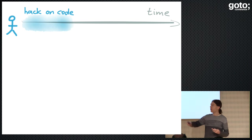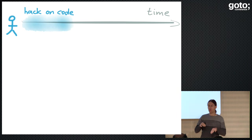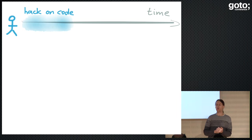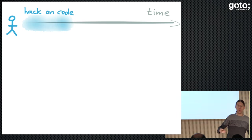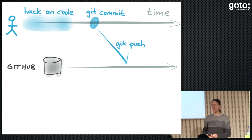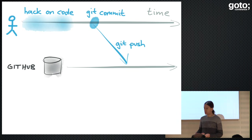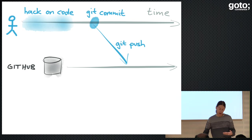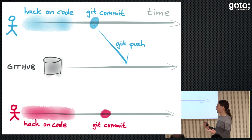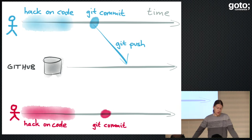I'd like to start with a scenario that will probably be familiar to you. You, a little blue stick figure, are hacking on some code on your computer, and at some point you decide that this code is done and you commit it using your favorite version control system — I'll just use Git as an example. You put the code in the repository, then push it somewhere so that other people can see it as well. In the case of Git, maybe you push it to a repository on GitHub, and this is the communication mechanism for people on your team.